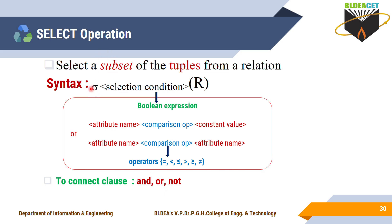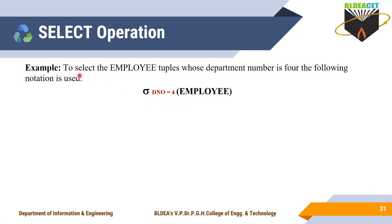Example: to select the employee tuples whose department number is 4. The aim is to select only those tuples from the employee relation where the department number is 4. Using the select operation: σ(dno=4)(EMPLOYEE). Here, 'dno' is the attribute name that holds the department number, equal to the value 4, and EMPLOYEE is the relation name.